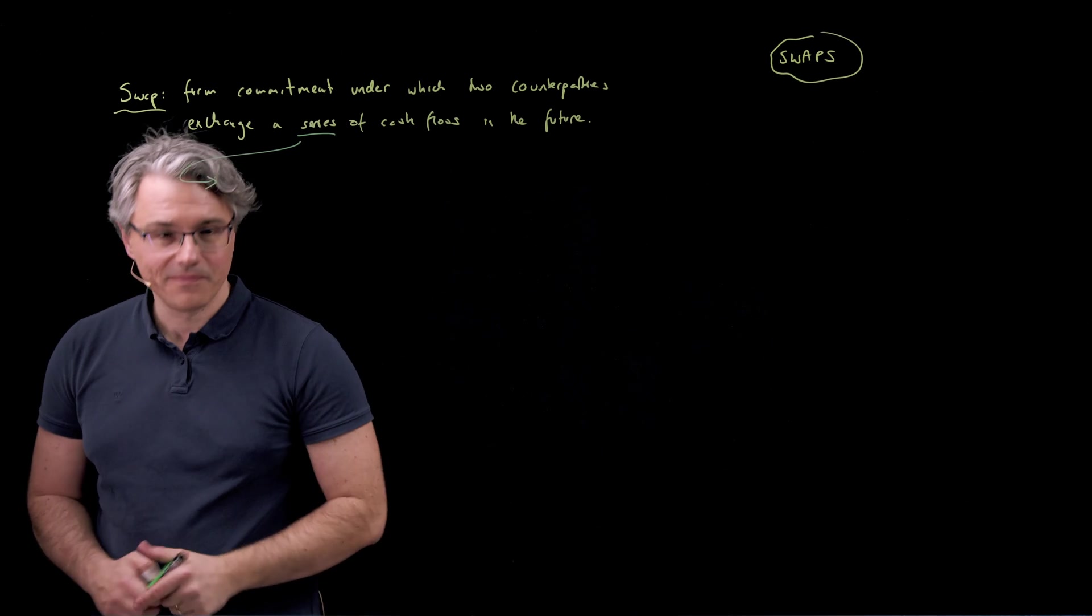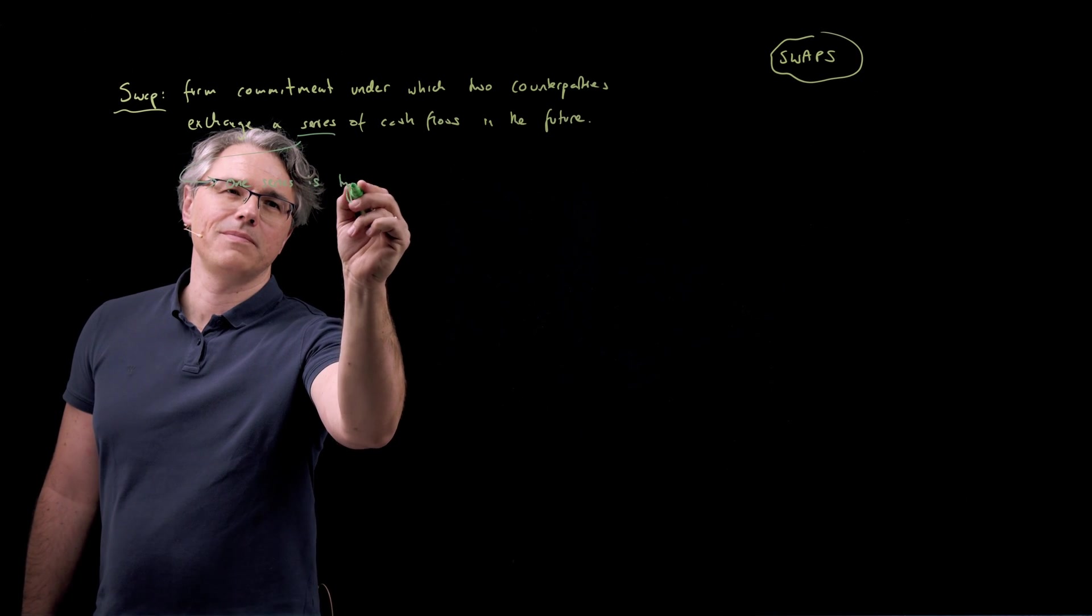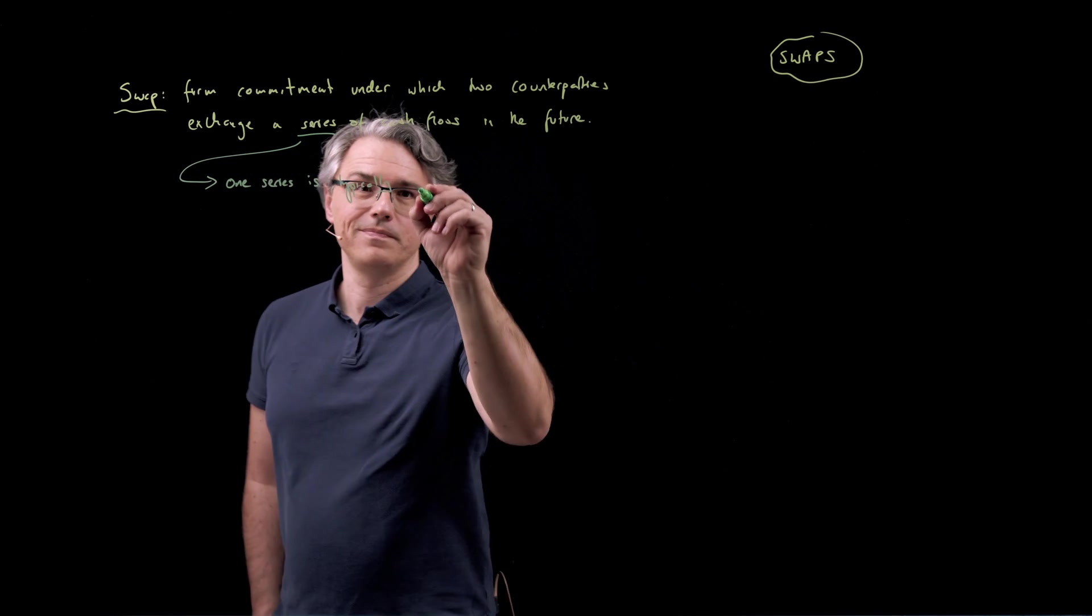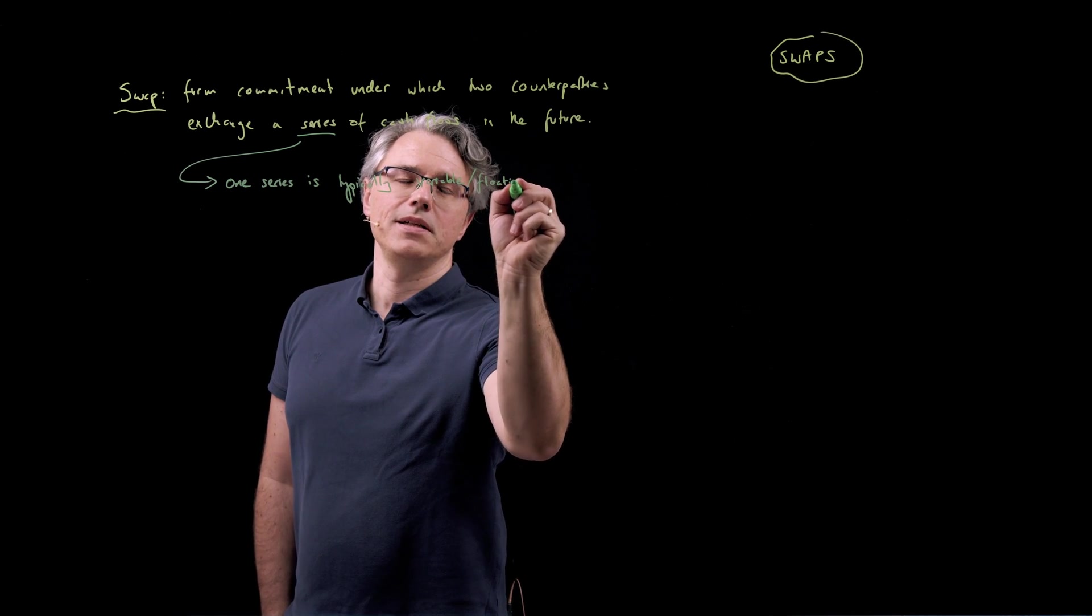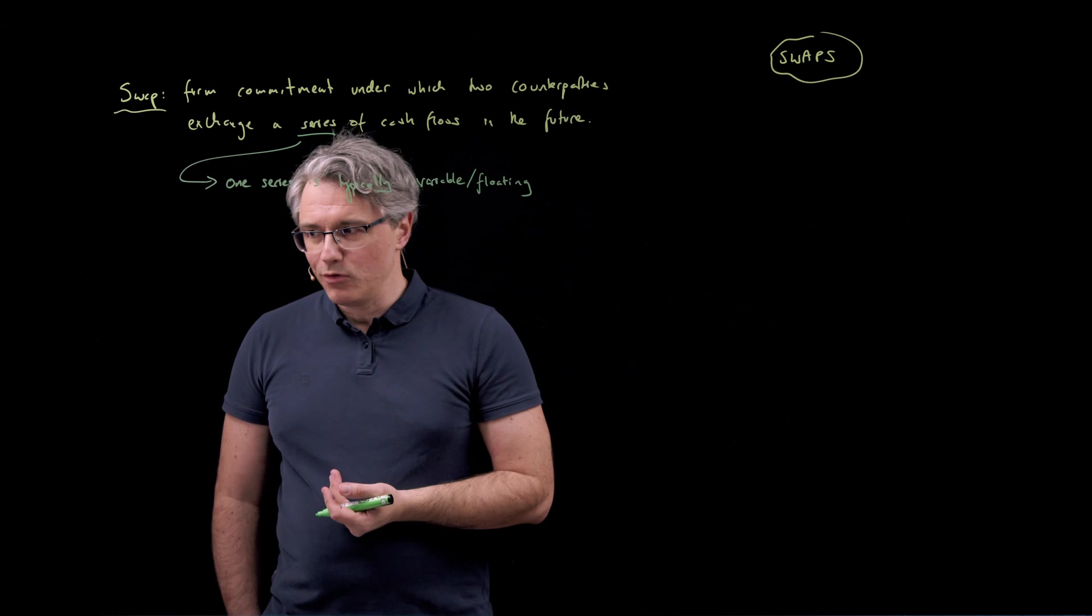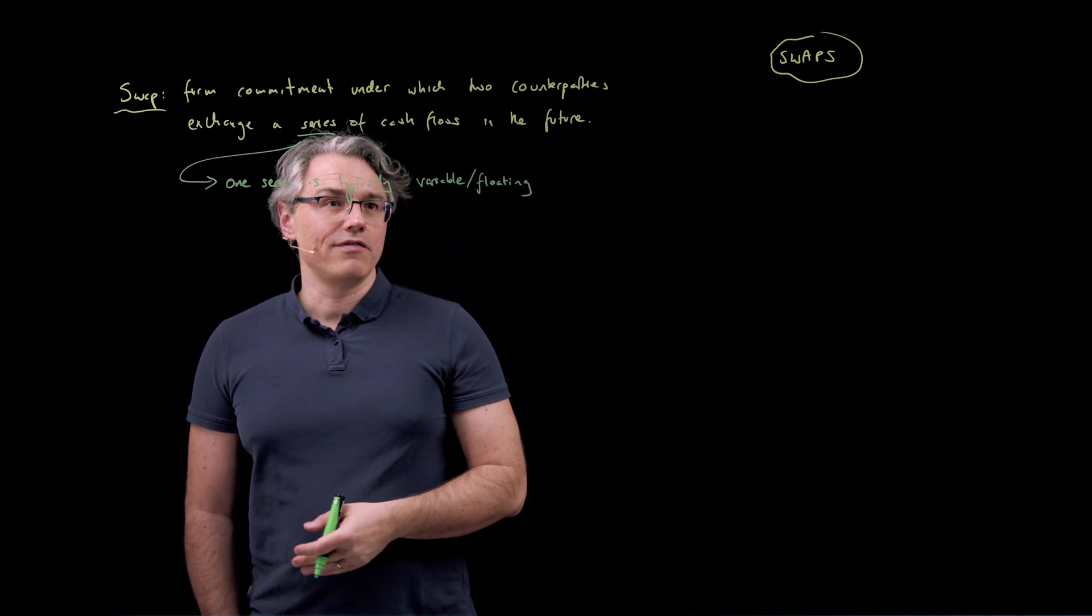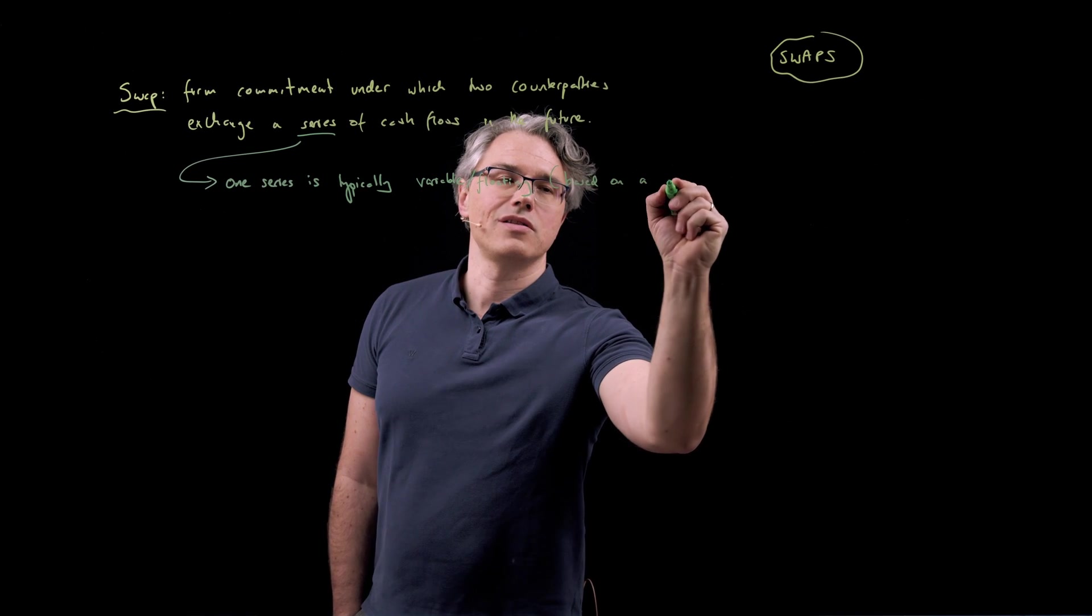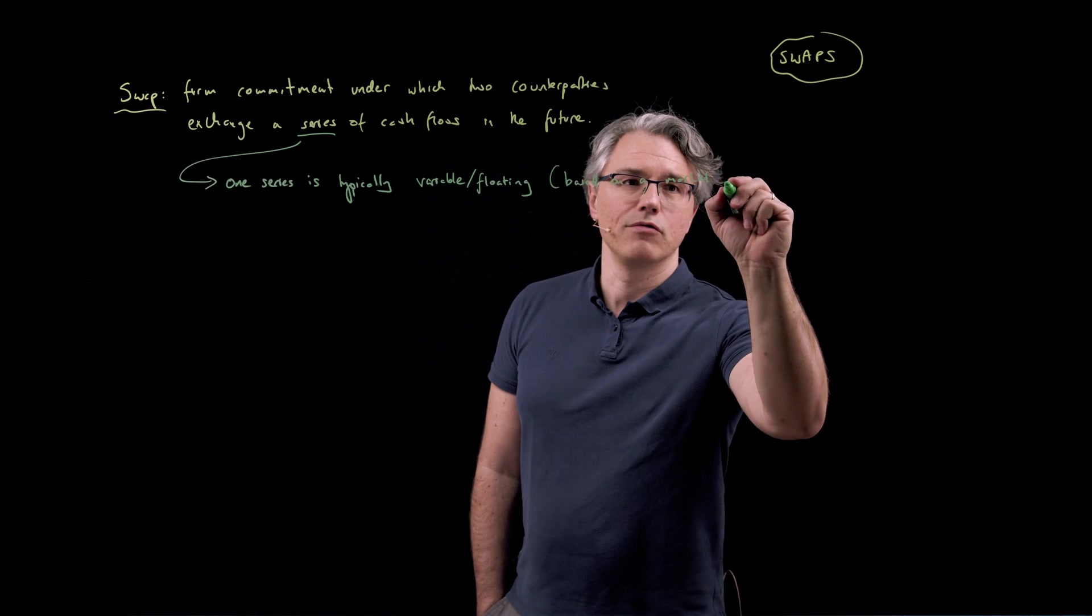because one of them, so let's say over here, one series is typically going to be variable or floating. So it's going to be based on some market variable, like an interest rate, or maybe the price of something that trades in the market and therefore changes over time. One series is typically variable or floating, so based on some market derived reference price or reference rate.